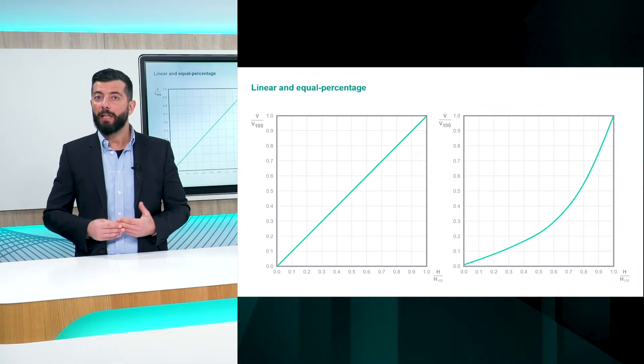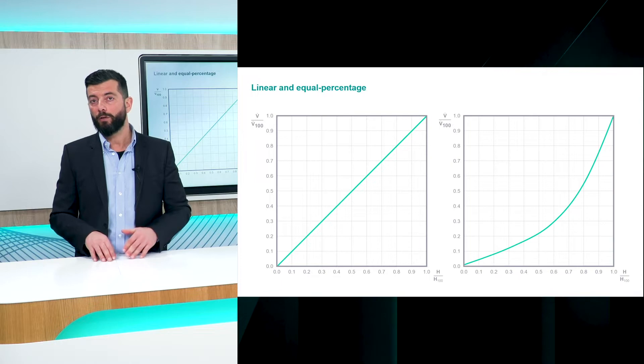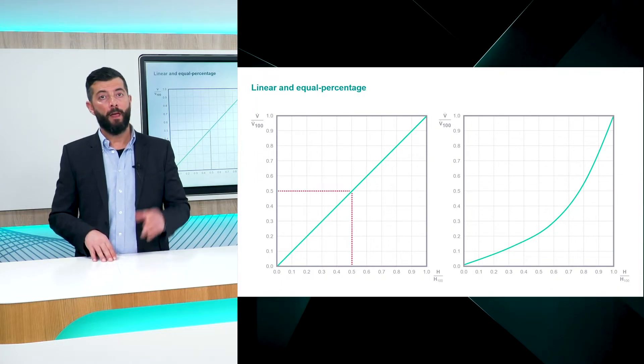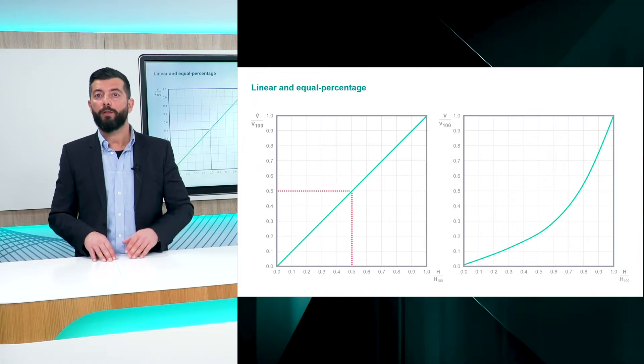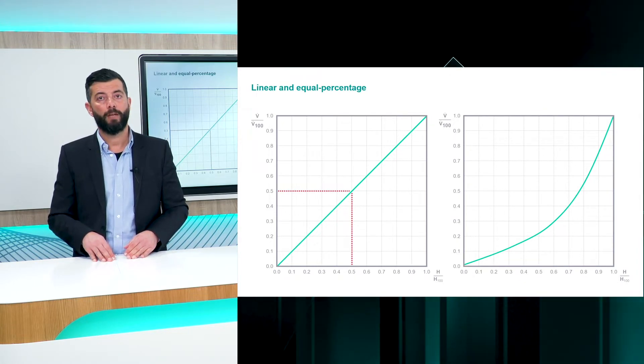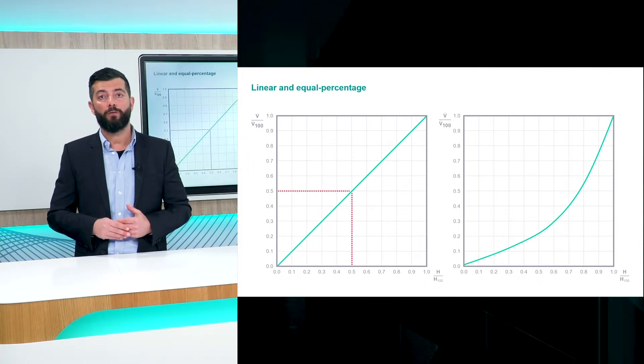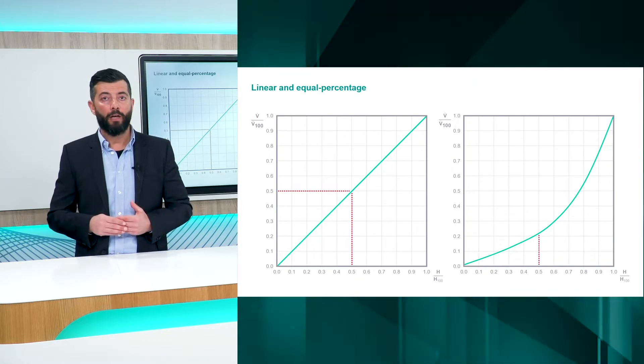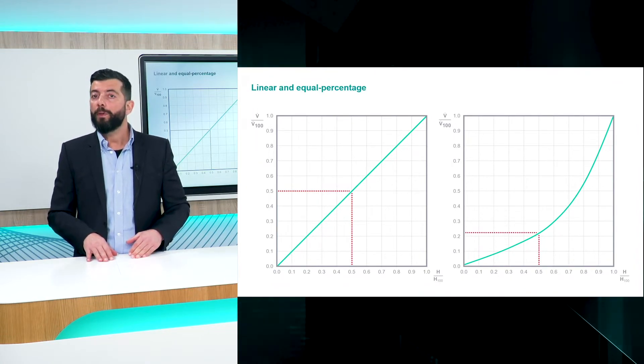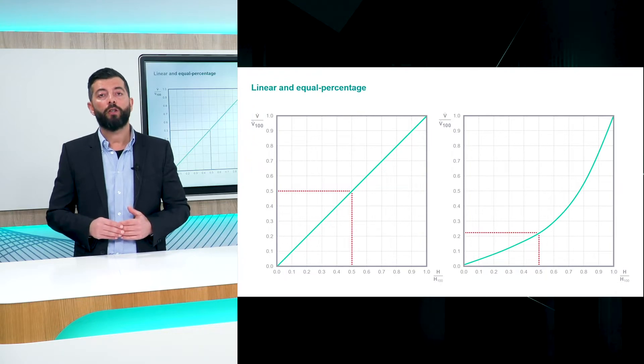So when you use a linear combination of valve and actuator, and the control signal is reduced by 50%, that means you have consequently reduced the flow rate by 50% as well. But if you try to do the same in an equal percentage valve and actuator combination, here 50% control signal would be a 23% change in flow rate.